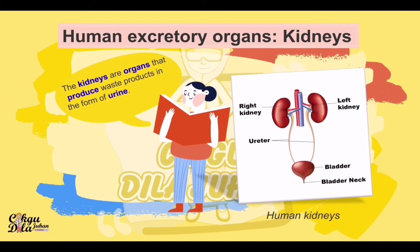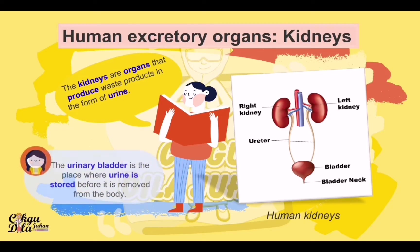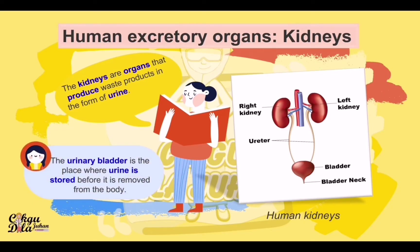The kidneys are organs that produce waste products in the form of urine. The urinary bladder is the place where urine is stored before it is removed from the body.